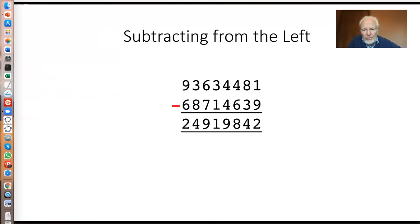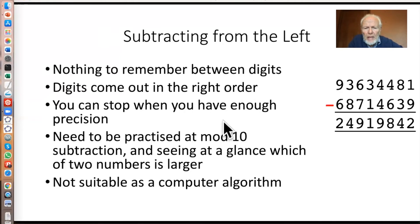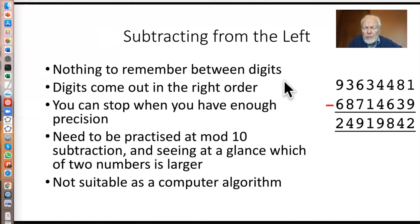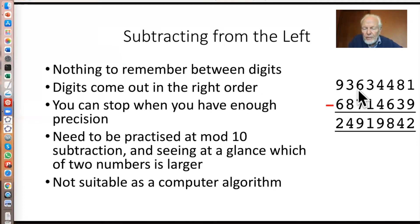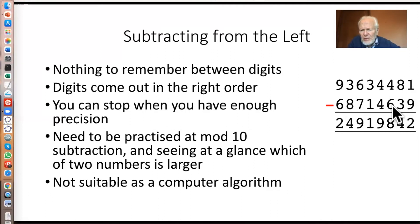So that's how you do it working from the left. You're hardly ever going to do that with such big numbers — you'd use a calculator. But it works very well mentally for two or three digit numbers. Why do I like it? There's something to remember between the digits, because they're done sort of independently. Most importantly, the digits come out in the right order, so if you want to tell someone the answer, you tell them as you're working it out. You don't need to work them all out backwards, remember the whole lot, and then recite them forwards. And importantly, you can stop when you have enough precision.